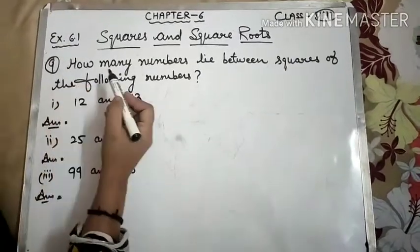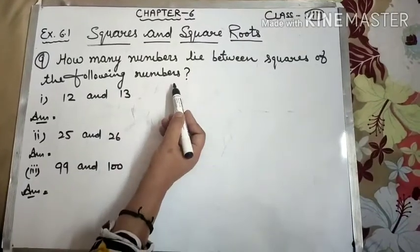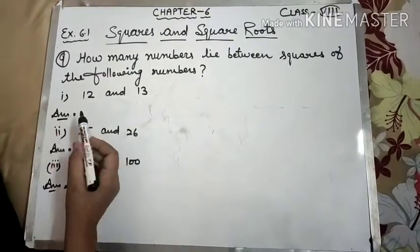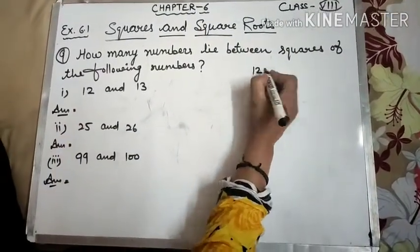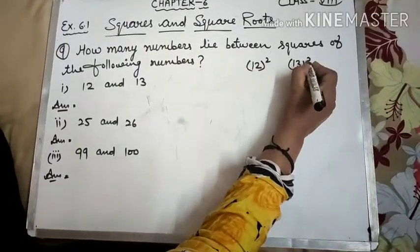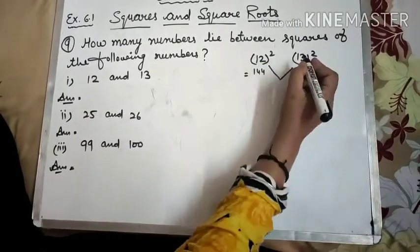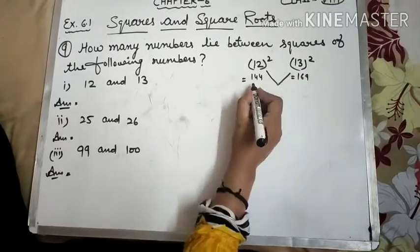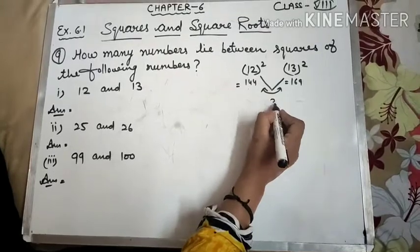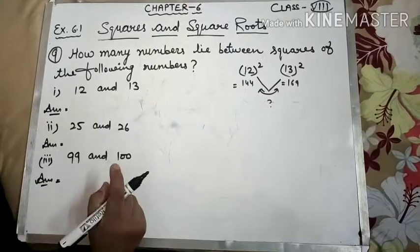Now question 9: How many numbers lie between squares of the following numbers? It's asking how many numbers lie between their squares. The numbers are 12 and 13. Their squares - what will 12² be? 144. What will 13² be? 169. Between 144 and 169, how many numbers lie? We have to tell this, but we don't do actual calculation, we use a formula.